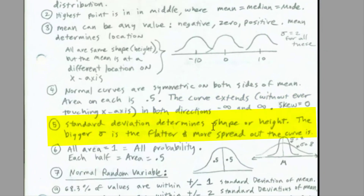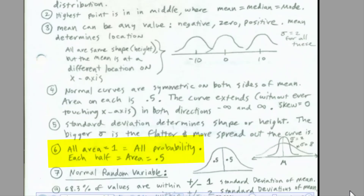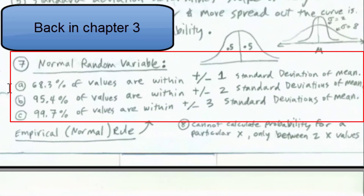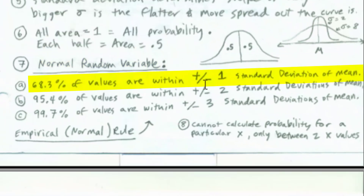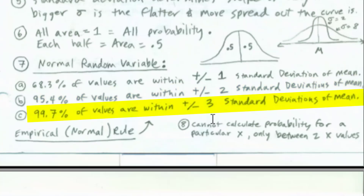Standard deviation determines the shape or height. The bigger the standard deviation, the flatter and more spread out. For instance, standard deviation 2 gives a taller narrow curve, while standard deviation 8 is much flatter and more spread out — but all area equals 1, with 0.5 on either half. Our empirical rule says: between plus or minus one standard deviation, about 68% of values lie; plus or minus two, about 95%; plus or minus three, almost all values. When we get past three standard deviations, it's very unlikely. We cannot calculate probability for any particular x, only between two x values.